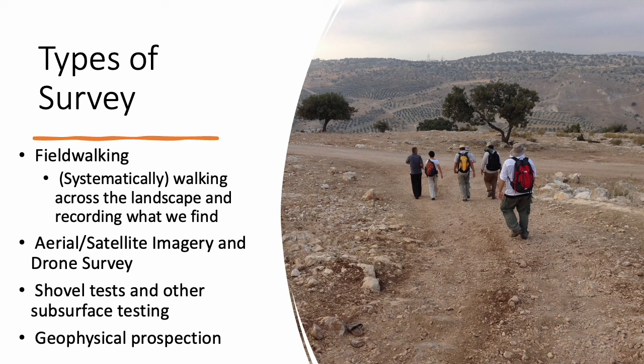One of the most important survey methods remains field walking. This involves basically walking around the landscape, preferably over plowed surfaces, and looking at the ground to try to find artifacts that might be signs of past human activity. Other methods include aerial or satellite imagery and drone survey. And where artifacts are not visible on the modern surface, sometimes we have to use shovel testing, coring, or geophysical prospection to determine whether there's something underneath the ground.